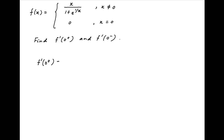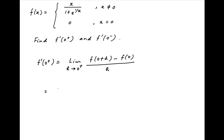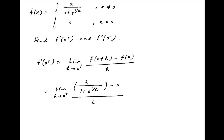The value of f'(0) from the positive side is equal to the limit as h tends to 0 from the positive side of [f(0+h) - f(0)] / h. This equals the limit as h tends to 0 from the positive side of f(h), which is h divided by (1 + e^(1/h)), minus f(0) which is 0, all divided by h.